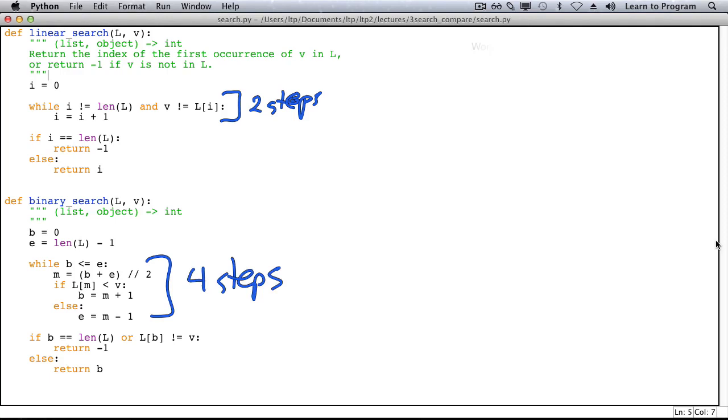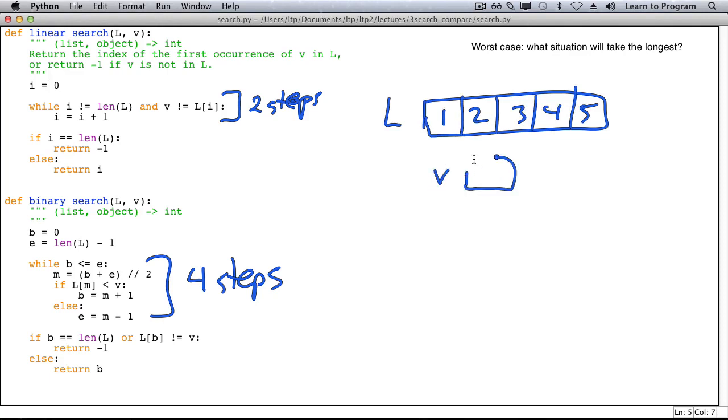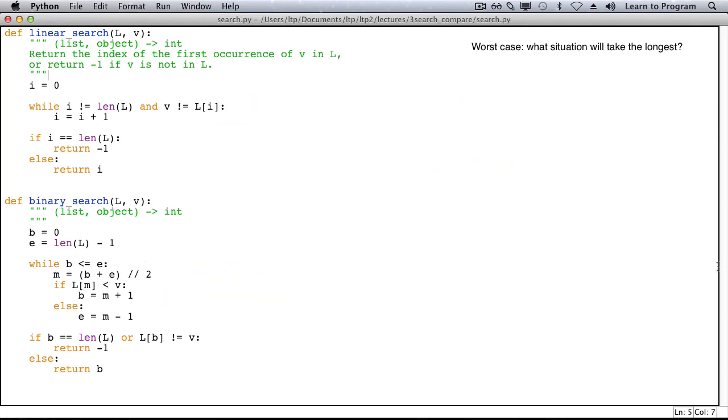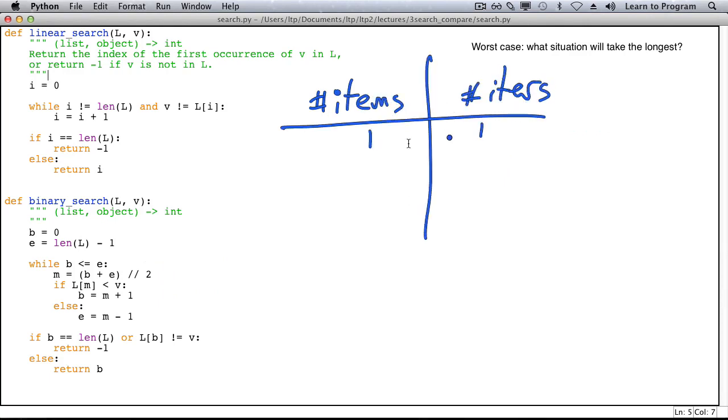We're going to compare these algorithms in the worst case. That happens when the value is not in the list for linear search. As an example for linear search if my list is one two three four five so there were five items in the list and I'm looking for value maybe six then I look at all five items. Let's make a table of the number of items and the number of iterations. If there's one item then there's one iteration. If there's two items there's two iterations. In general if there are k items there are k iterations.